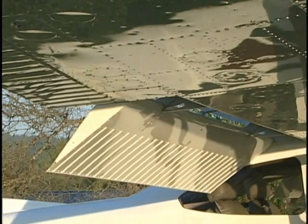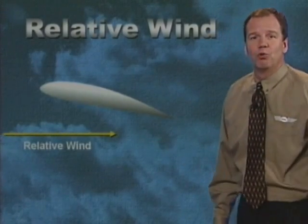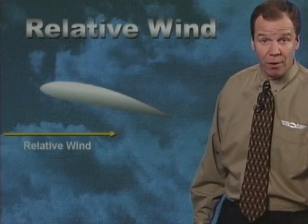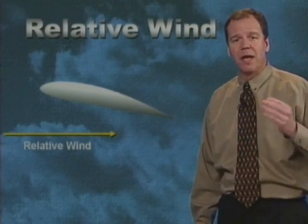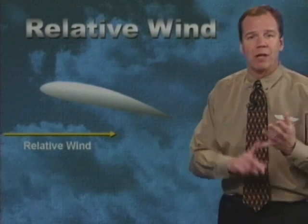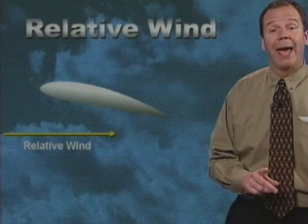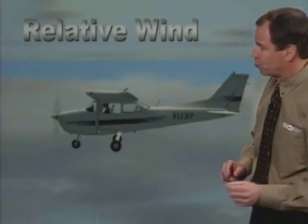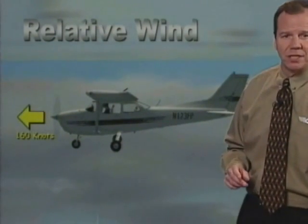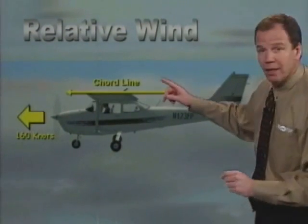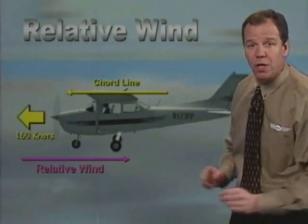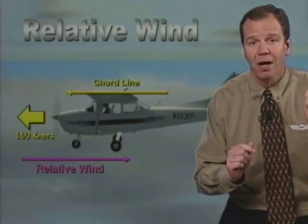The next term is for this little arrow popping up right here — it is the relative wind. The relative wind is the wind that is being felt by the airfoil as it moves through the air, or as the air moves over it. The relative wind is always parallel to and opposite the direction of flight. Notice that the aircraft here is traveling forward at a speed of about 160 knots, the chord line is shown by this line, and the relative wind is shown by this arrow — moving in opposite but parallel directions.